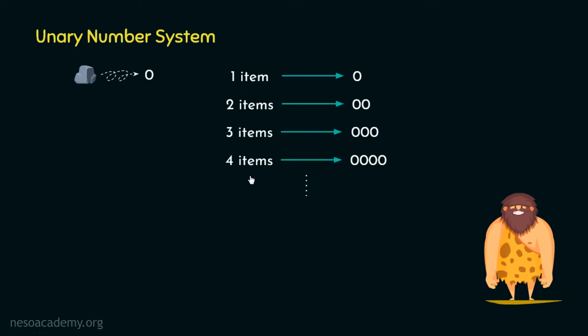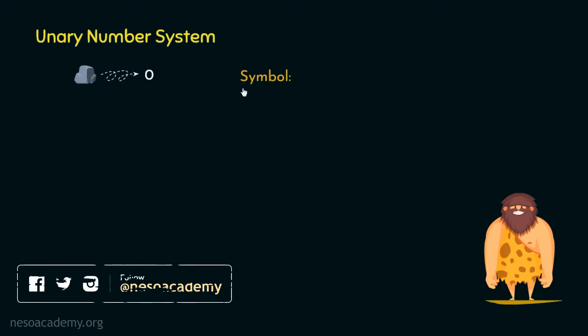So specifically, for this, we are using the symbol zero and the number of symbols in this number system is one. Now, the number of symbols in a particular number system is called the base of that number system. And since it's one in this case, that's the reason why this number system is called the unary number system.